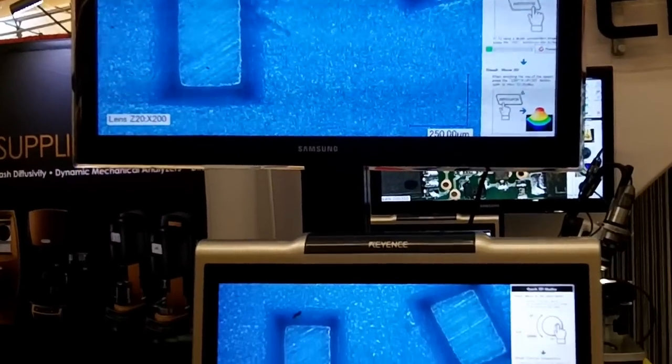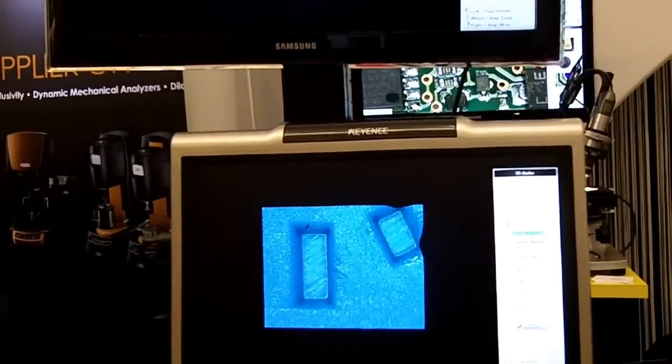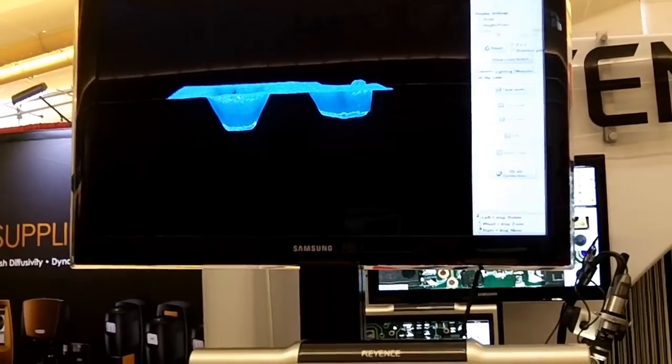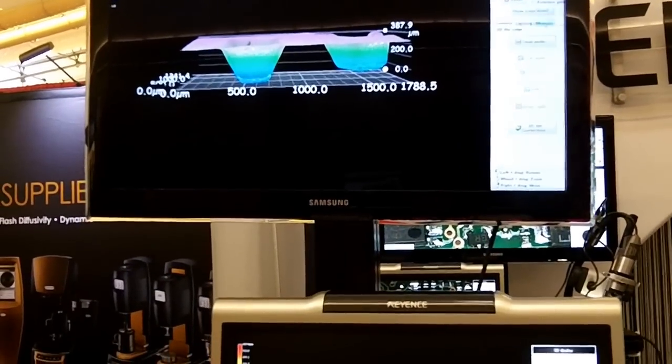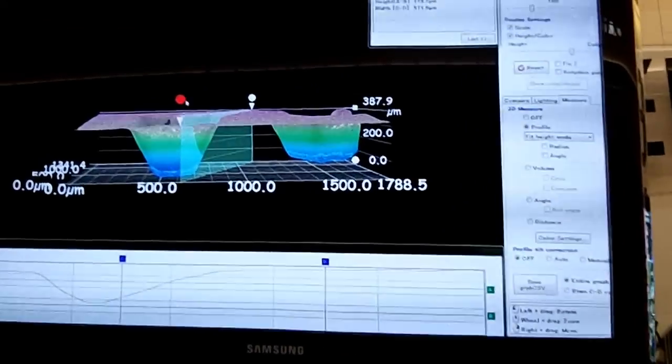Great. And so we can push this button one more time, and we can take this composite image and turn it into a three-dimensional model. So we're trying to get a better understanding of the surface shape. We can also measure on it as well, profile, volume, anything like that.